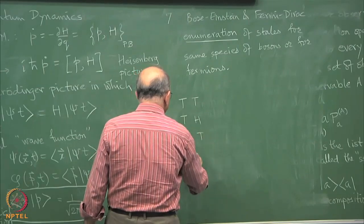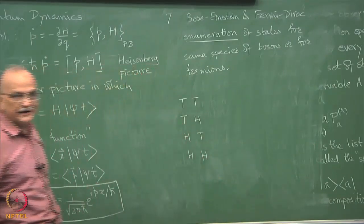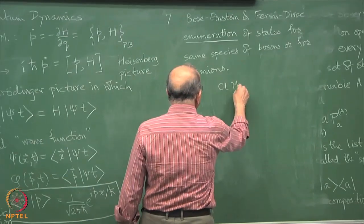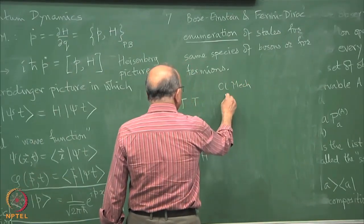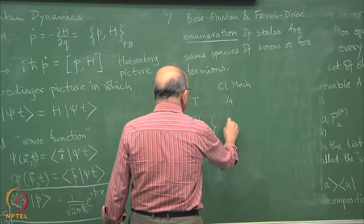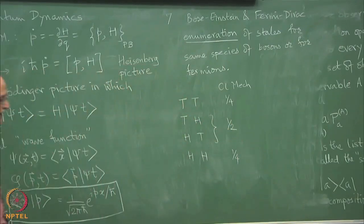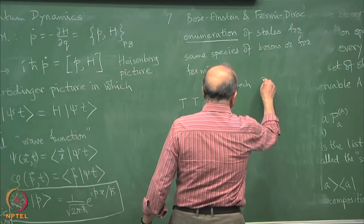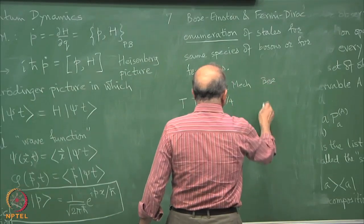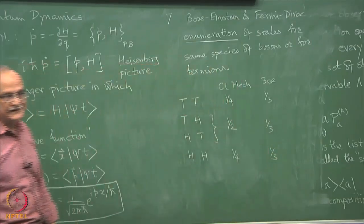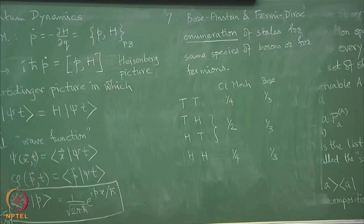But if you have Bose statistics, it is exactly one third, one third, and one third. This is the strange thing about quantum mechanics — the 2 particles are quote 'indistinguishable,' but they are so indistinguishable that actually the word indistinguishable is a misnomer.